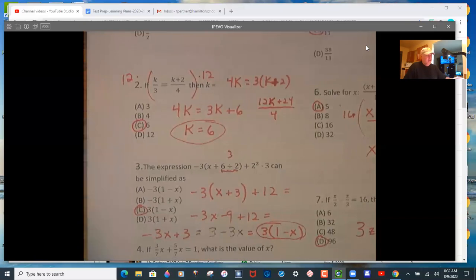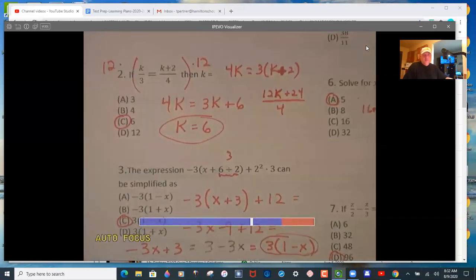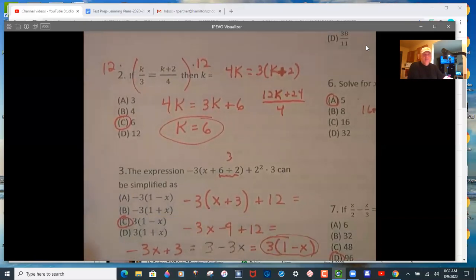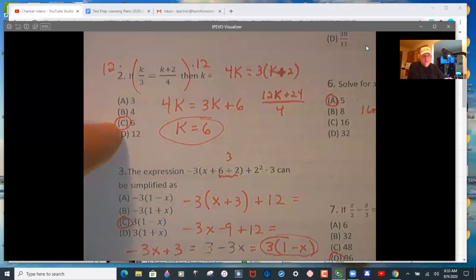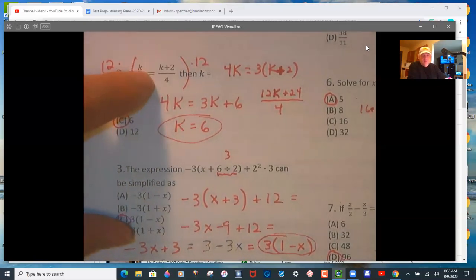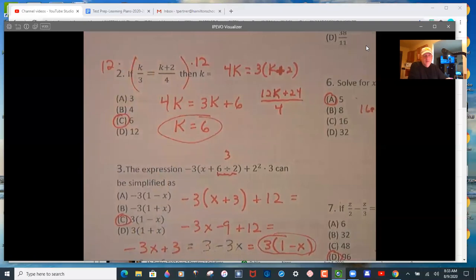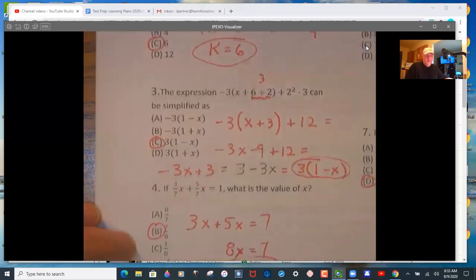Number 2, multiplying to eliminate denominators is the first step that you would want to do. Multiplying both sides by 12. And certainly you can just substitute your answer choices. So if the answer is 6, then 6 over 3, which is 2, has to equal 6 plus 2, which is 8 over 4. So if you don't know, just try substitution. A lot of times that can win.